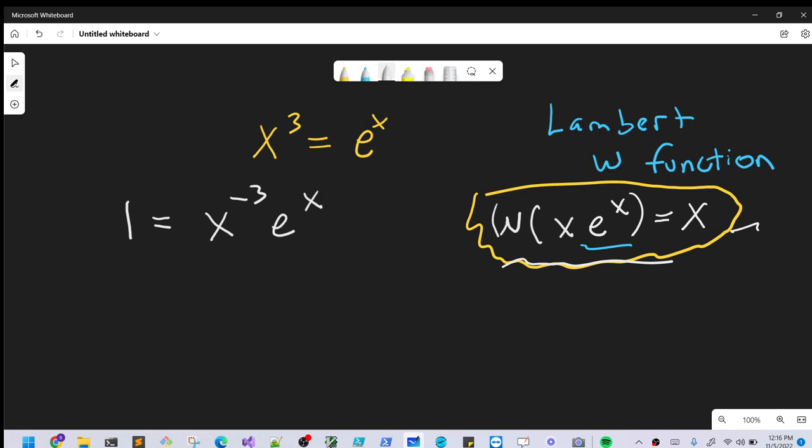Then we'll have x⁻³eˣ on the right. We have our xeˣ, but we need to get rid of this exponent. So let's raise both sides to the -1/3 power. The convenient thing is, on the right side,